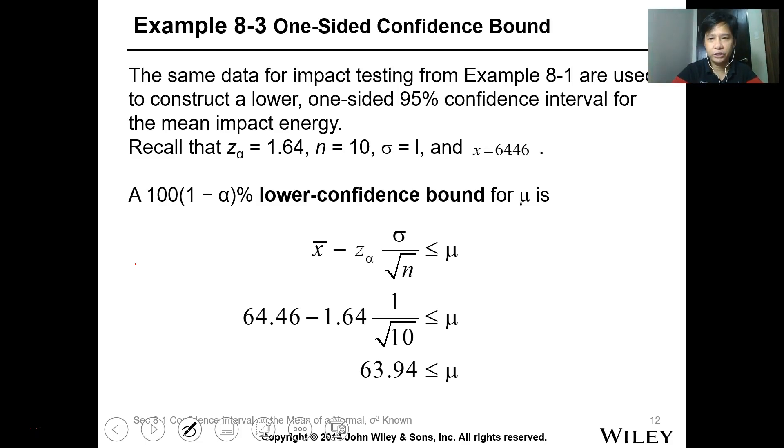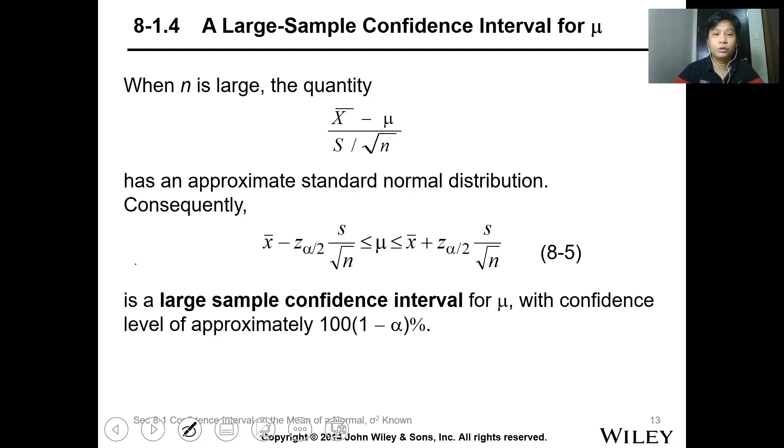This is a continuation of Lesson 7 for the Statistical Interval for Single Sample. Another method of calculating Confidence Interval, especially for Large Sample. When we say Large Sample, the number should be n greater than 30 or 40, but we will use the 40 value.